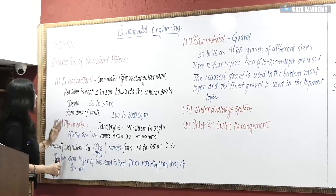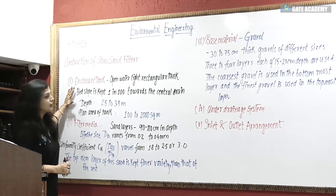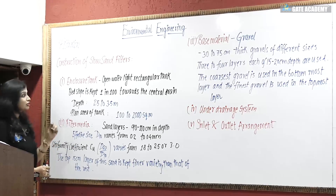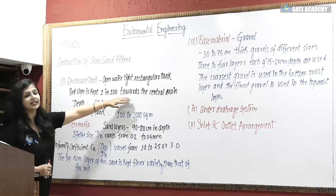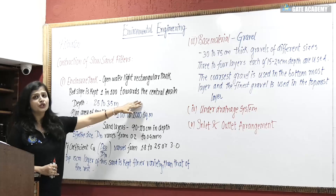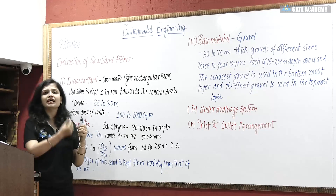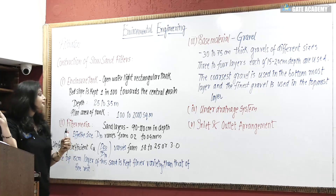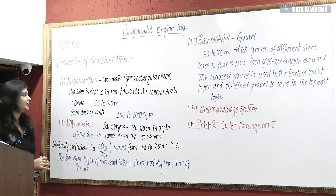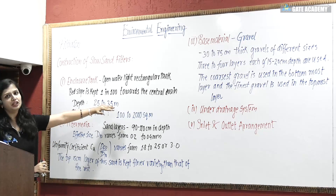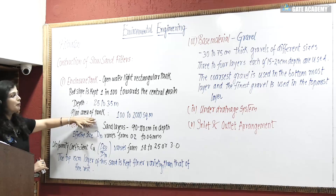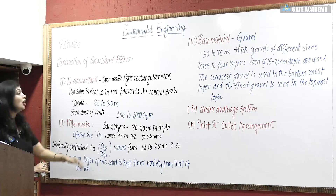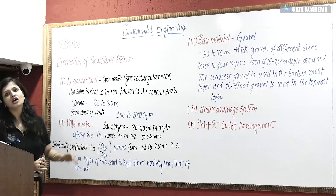Now let me write down the construction details of slow sand gravity filters. The enclosure tank is an open, watertight rectangular tank. The bed slope is 1 in 100 toward the central drain, because the lateral drains flow to the central drain. The depth is 2.5 to 3.5 meters. The planned area where slow sand gravity filters are set up is around 100 to 2000 meters square.